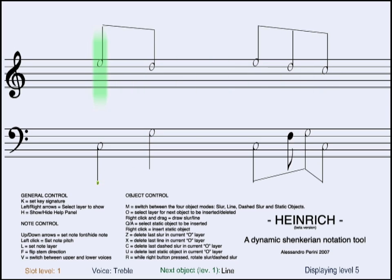All objects are inserted by right clicking and dragging, but before you need to select the layer of insertion by pressing O. To adjust the slur rotation, press and hold R while the right mouse button is still pressed.